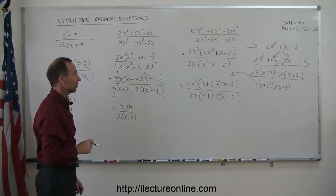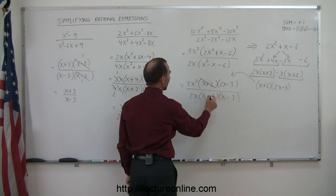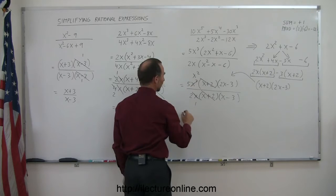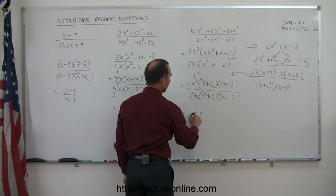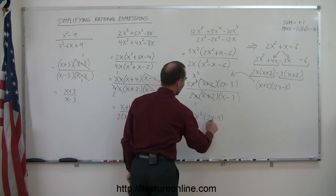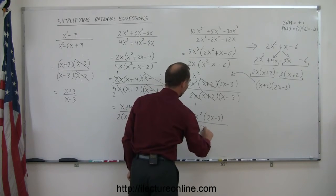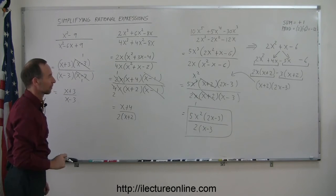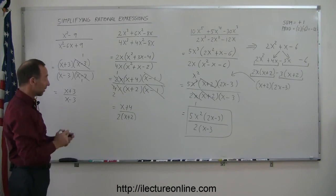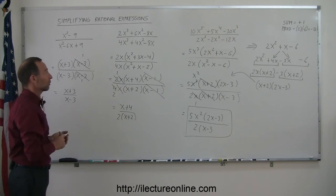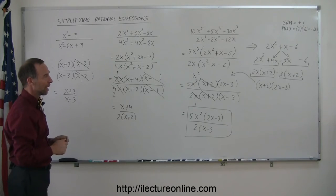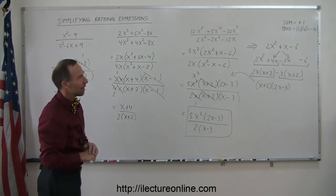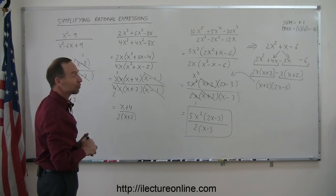Now I'm ready to simplify the full expression. I can see that I have (x + 2) and (x + 2) — those cancel. I have x and x³, which leaves x². So this simplifies to 5x²(2x - 3) divided by 2(x - 3). That's the simplified form of the original expression. This is a good exercise in factoring as well as in simplifying rational expressions, particularly for cases where we don't have a 1 in front of the x² term.